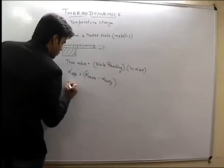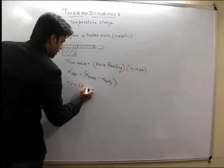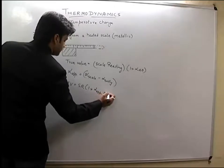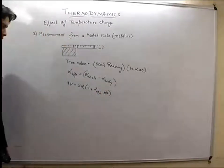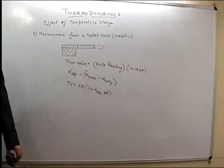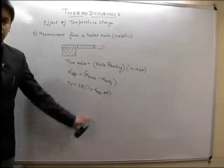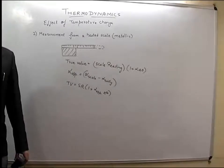So in this case, the true value will be equal to scale reading into 1 plus alpha apparent into delta theta. So in this case, we will just raise the value. Alright, and you can easily explain it.